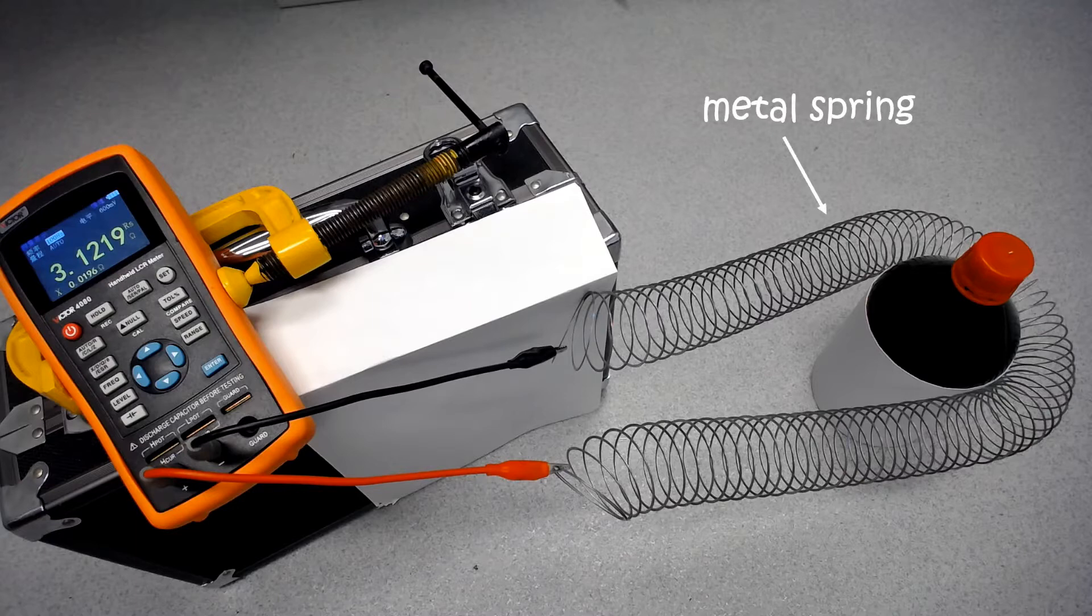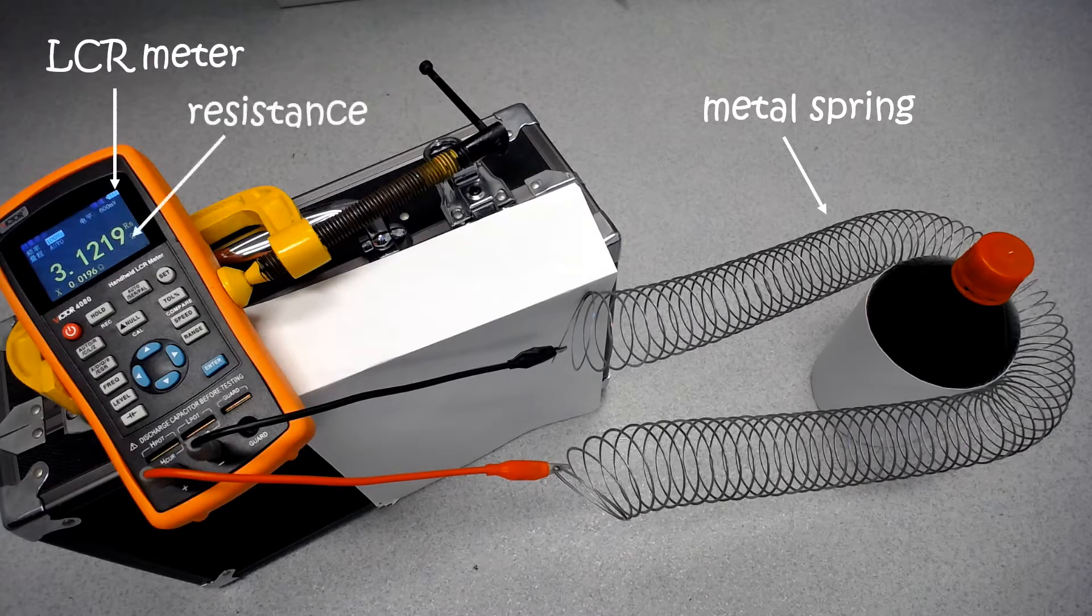Here, we have a metal spring that is connected to an LCR meter. The meter is measuring the resistance of the spring, which is about 3.1 ohm.